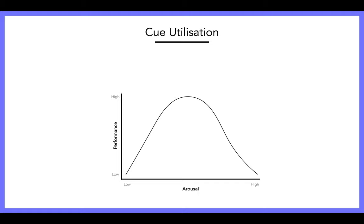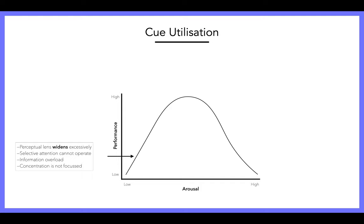Cue Utilization is often viewed alongside the inverted U theory. Starting with a low level of arousal, what Cue Utilization suggests is that our perceptual lens — like what we're seeing at the time in the game — widens excessively. That means we're seeing task-relevant cues and task-irrelevant cues. What's happening is we've got an information overload; selective attention, clearly and presently focused on the task at hand, cannot operate. Concentration is not focused when we are under-aroused.